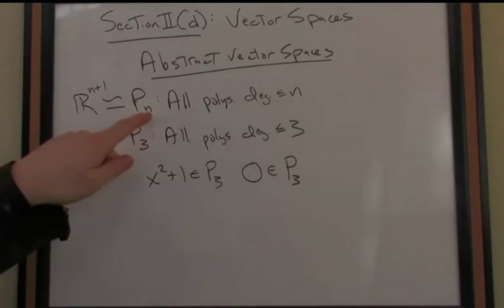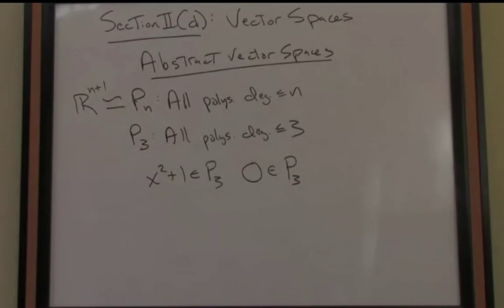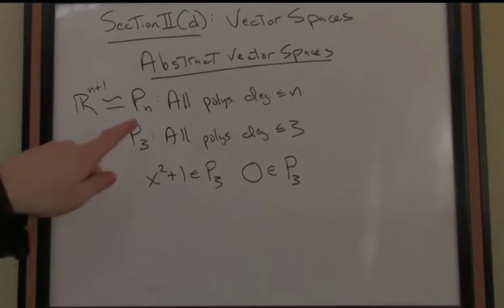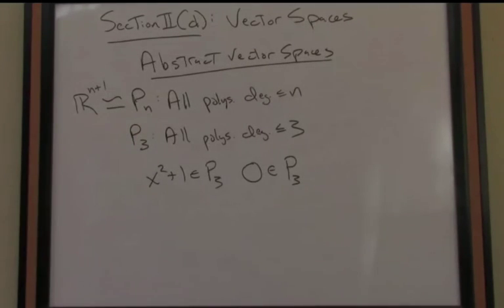So these are actually one in the same vector space. For instance, if I have an nth degree polynomial, if you think about it, an nth degree polynomial has a constant term, a linear term, a quadratic term, etc. all the way up to its nth degree term, that is the coefficient associated with x to the n.